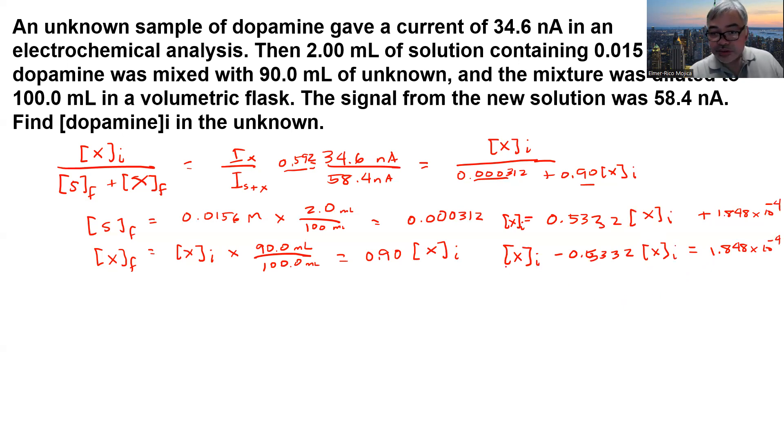Dividing 1.848 times 10 to the negative 4 by the coefficient, we get an Xi concentration of 3.96 times 10 to the negative 4 molar, or 0.396 millimolar.